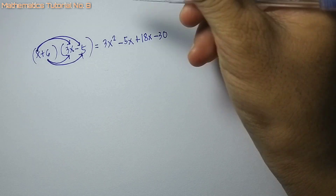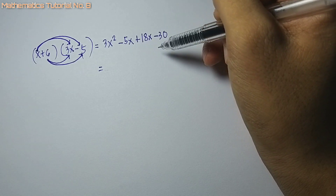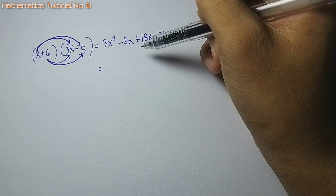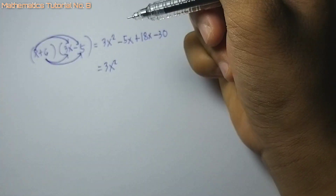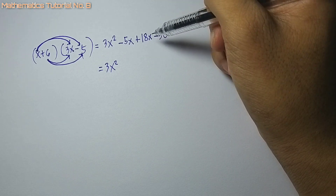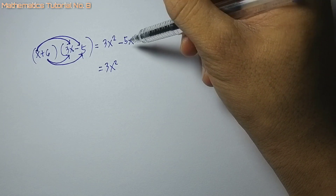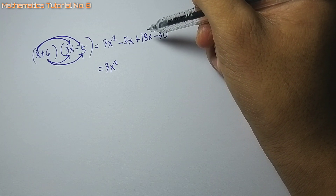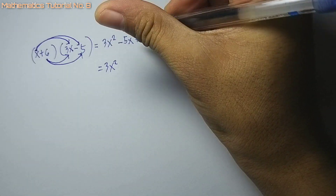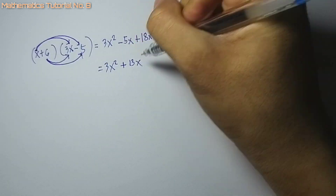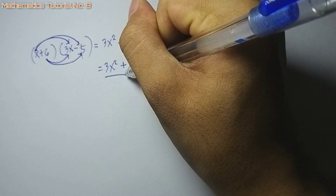So i-add na ang similar terms. Asa man ang parihas o terms? Kini: negative 5x og 18x — parihas na terms sila. So i-add sila. Ang rule sa addition, di man sila pariha og sign, so i-minus: 18 minus 5 that is 13, ug ang sign sa dakongang number positive man, so positive 13x. I-copy ang variable. Nabilin pa si negative 30. So ang product is 3x squared plus 13x minus 30.